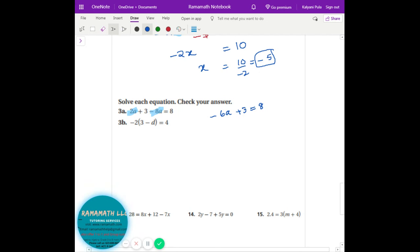Now take away 3 on both sides. Negative 6a equals 5. And divide by negative 6. I forgot there was the 3. See parentheses, you distribute it. So that's going to be negative 6 plus 2d equals 4. And then you add 6 on both sides. 2d is going to be 10. And then d is 5.